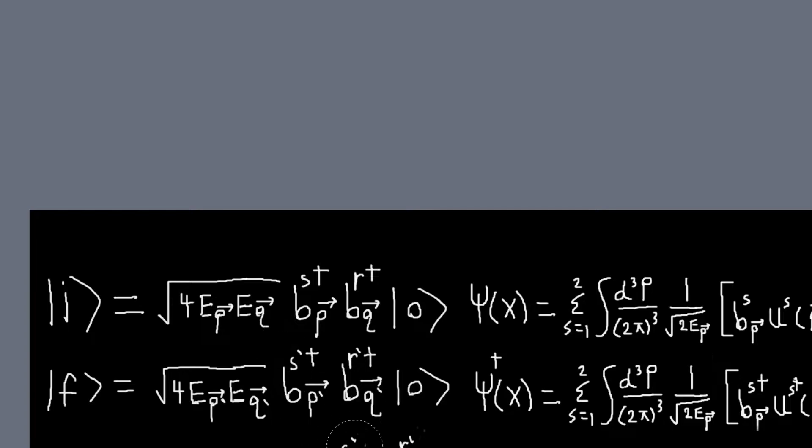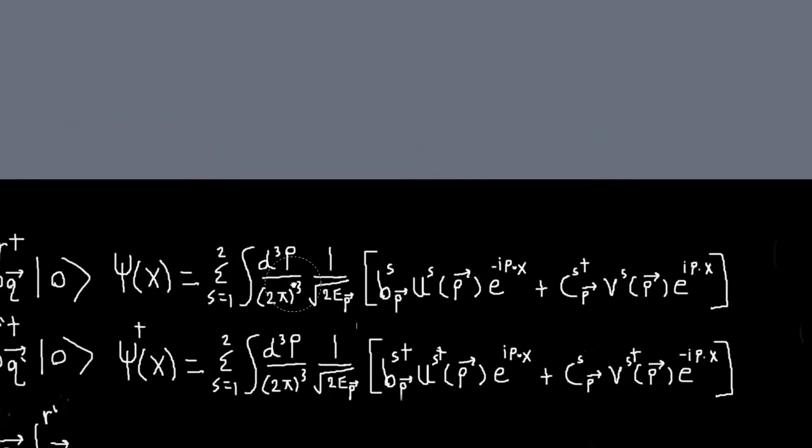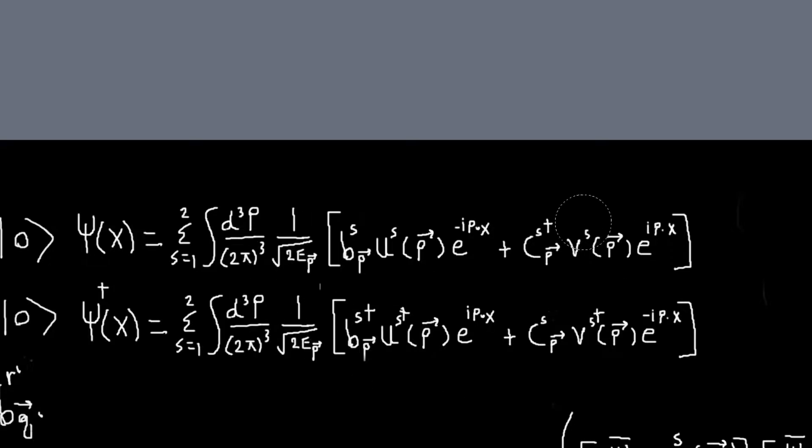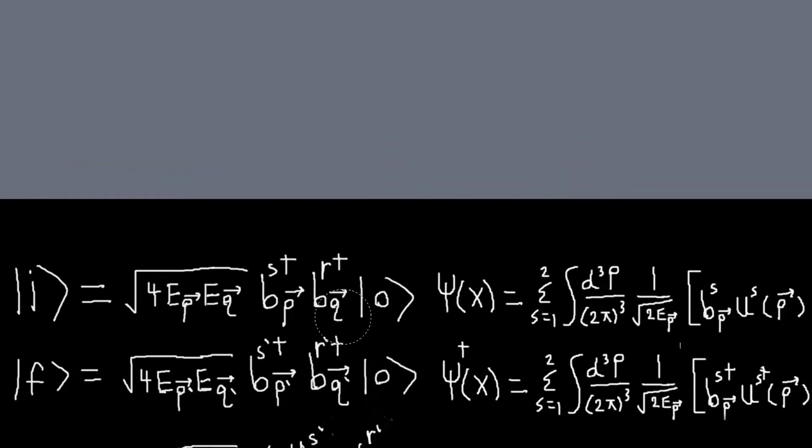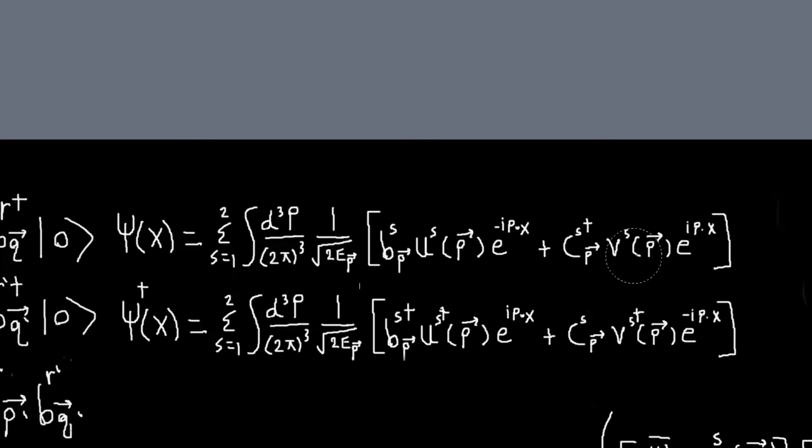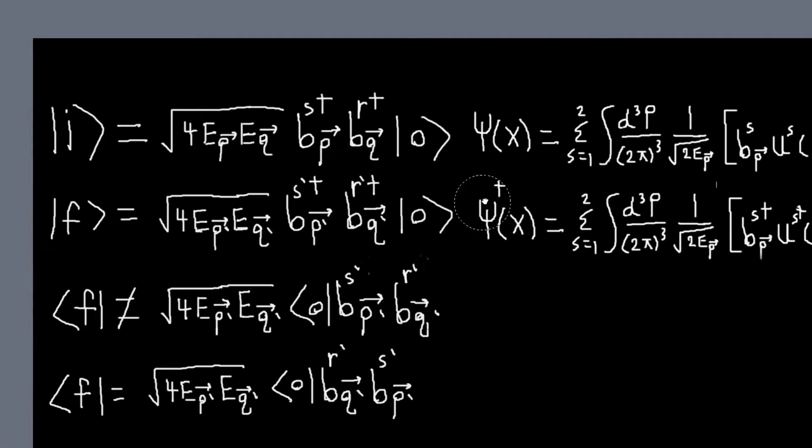But so basically we have our initial state, our final state here, and the main difference from the complex scalar field is now we have these spinor indices that we're carrying along, and obviously our field expansions are different. And since our states only involve these B particles, we can pretty much ignore the C parts of our fields, and that tells us that psi goes as B, and psi bar goes as B-dagger, and that'll be important later.